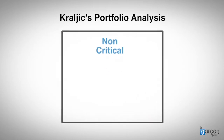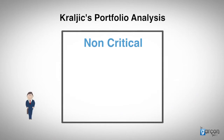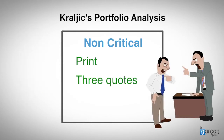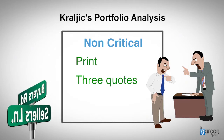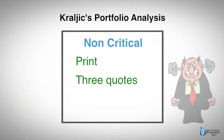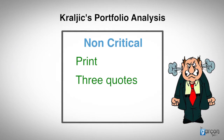So let's start with the non-critical quadrant. I used to have a team member called Phil, and Phil bought print. Phil would get three quotes for each job, and negotiate hard to get the best terms possible. The problem with Phil's approach was that while print can be a buyer's market, with low switching costs and multiple suppliers, Phil spent a lot of time focusing on one variable: price.